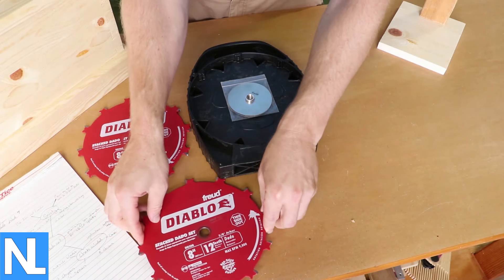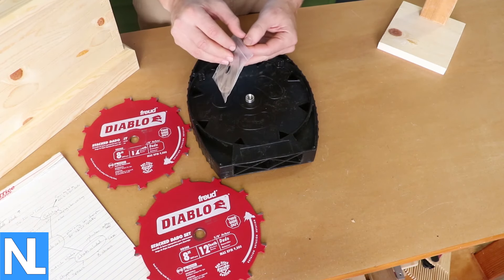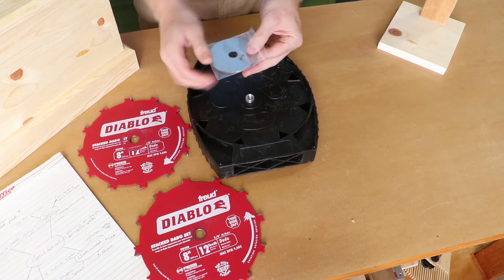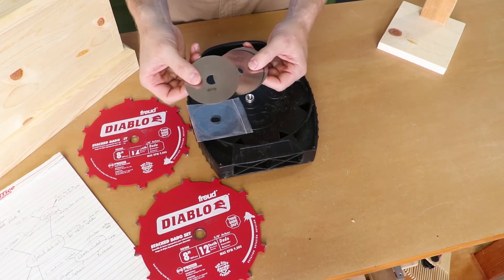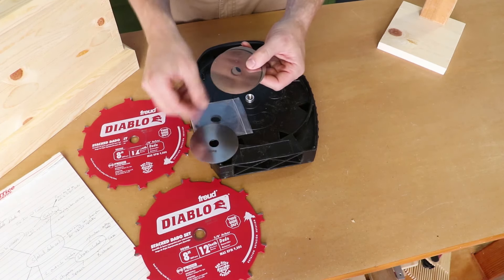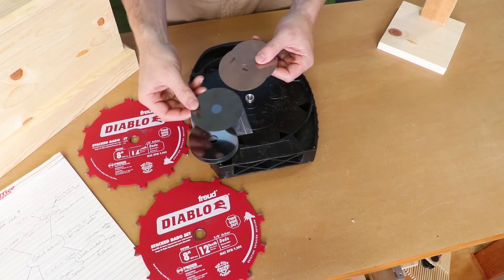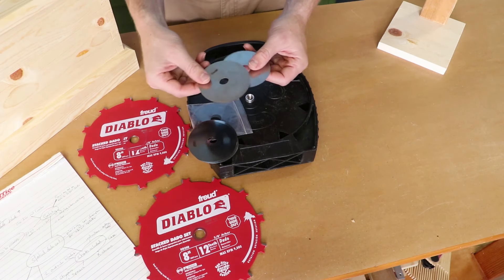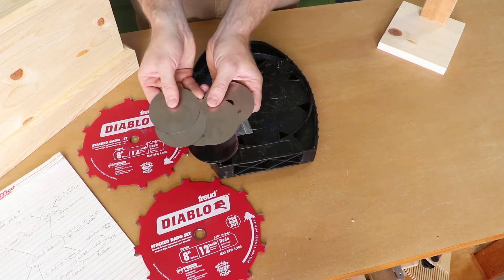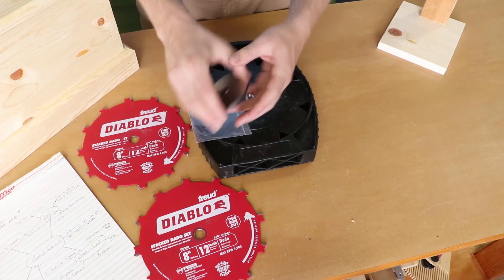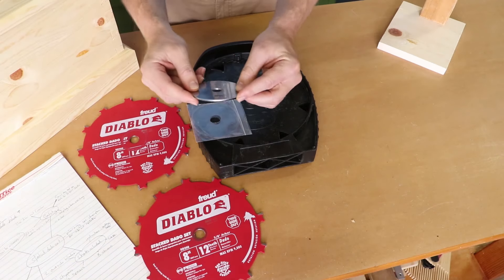Behind the outside blades, you get a packet of shims. There are eight shims here. You get 0.020, 0.012, 0.008, 0.004, and you get five of those. And those eight, this makes up almost exactly a sixteenth of an inch.